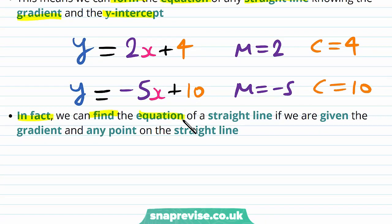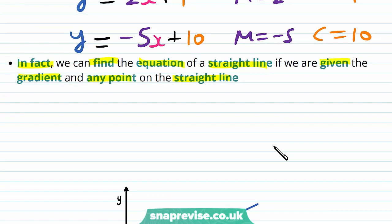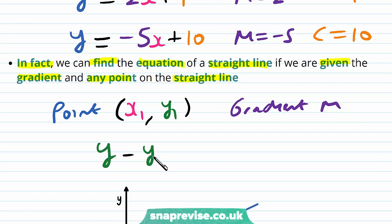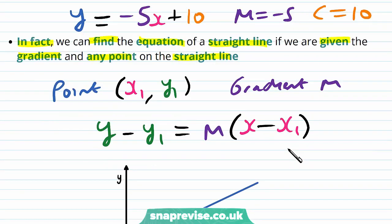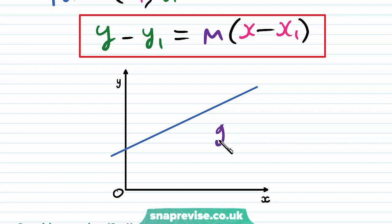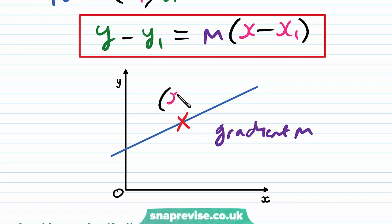We can find the equation of a straight line if we are given the gradient and any point on the straight line. In order to find the equation, all we need is a point — some x1, y1 — on the line as well as the gradient m. If these two pieces of information are given, we can write down the equation of the line straight away as y minus y1 is equal to m multiplied by x minus x1. All we need is x1, y1, and m, and we can substitute into this equation to get our equation for the straight line.